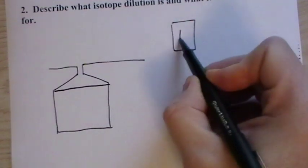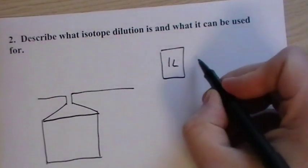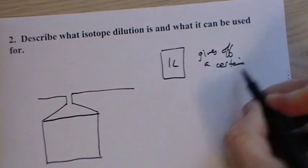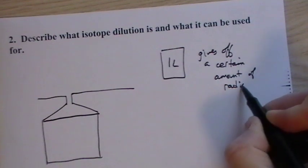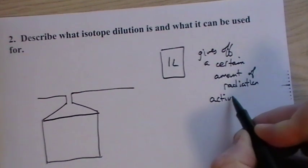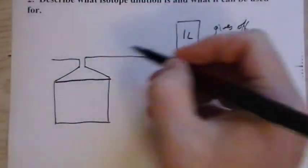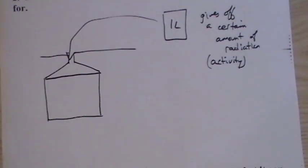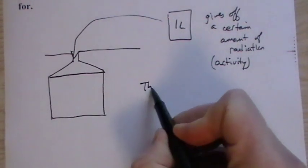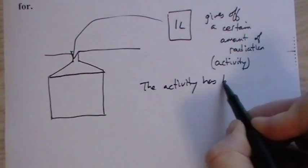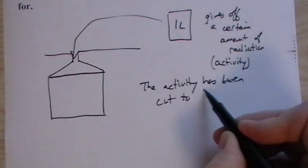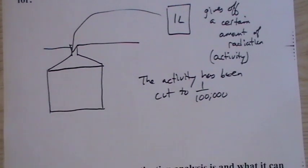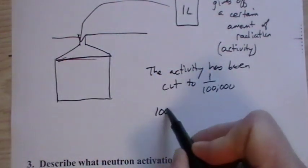So if you take one liter of a radioactive substance and it's giving off a certain amount of radiation, it has a certain activity. And you pour it into the underground reservoir. And this can be done with natural reservoirs as well. We dump it in there, let it mix around for a while, and you draw it back out. Let's say the activity has been cut to one 100,000th. Then you know that the volume of this container is 100,000 liters.